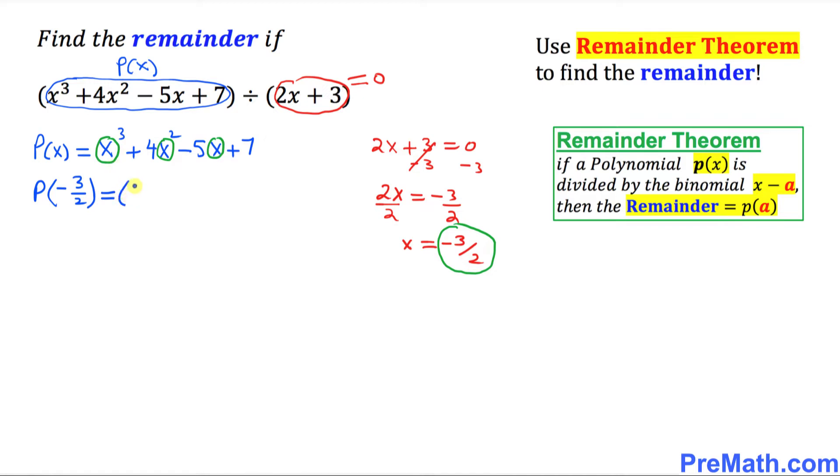wherever you see x, replace it by negative 3 over 2. This is power 3 plus 4 times negative 3 over 2 power 2 minus 5 times negative 3 over 2 plus 7.